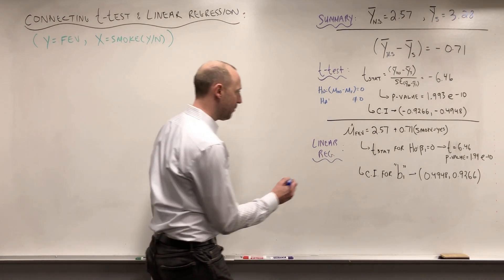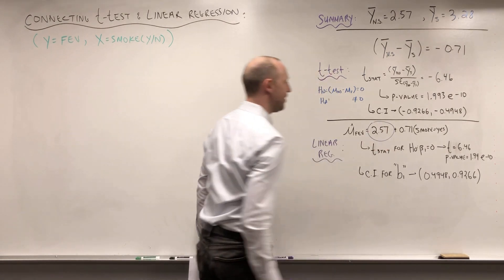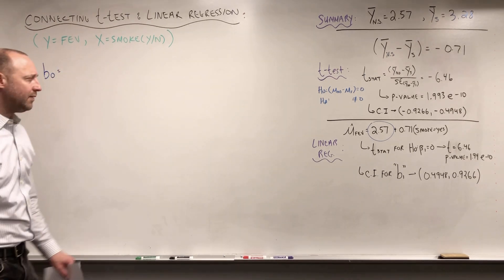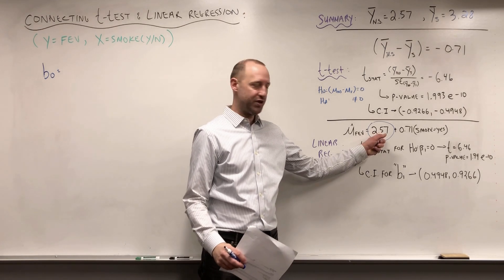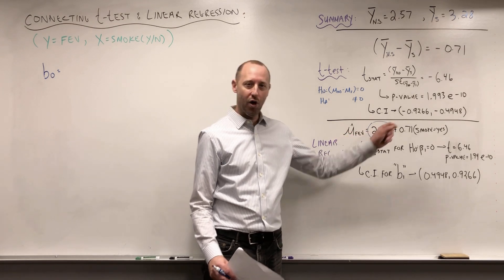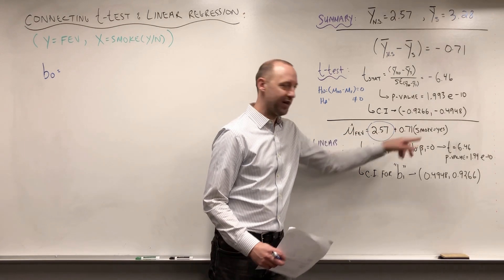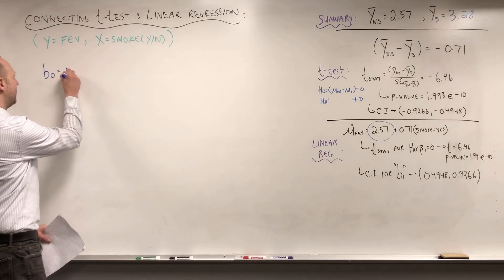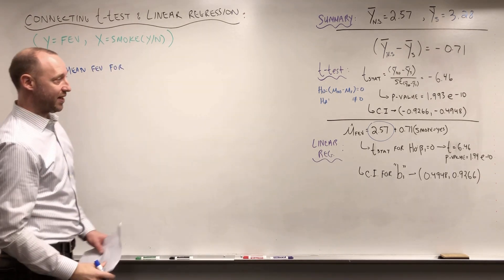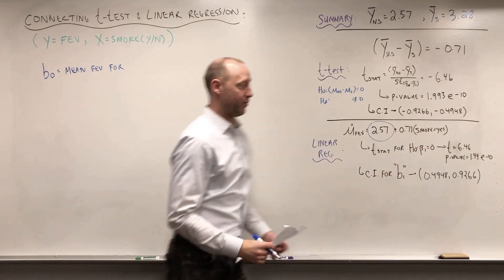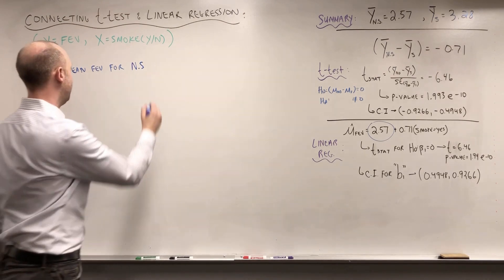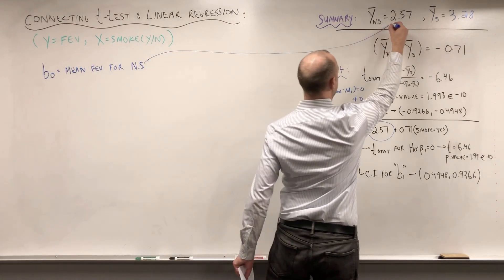First, I want to remind you about the intercept b0. The generic interpretation of a coefficient in a regression model is the mean y — or mean FEV — when all x are zero. In this case, when all x are zero, that means the person does not smoke, so b0 gives us the mean FEV for non-smokers.